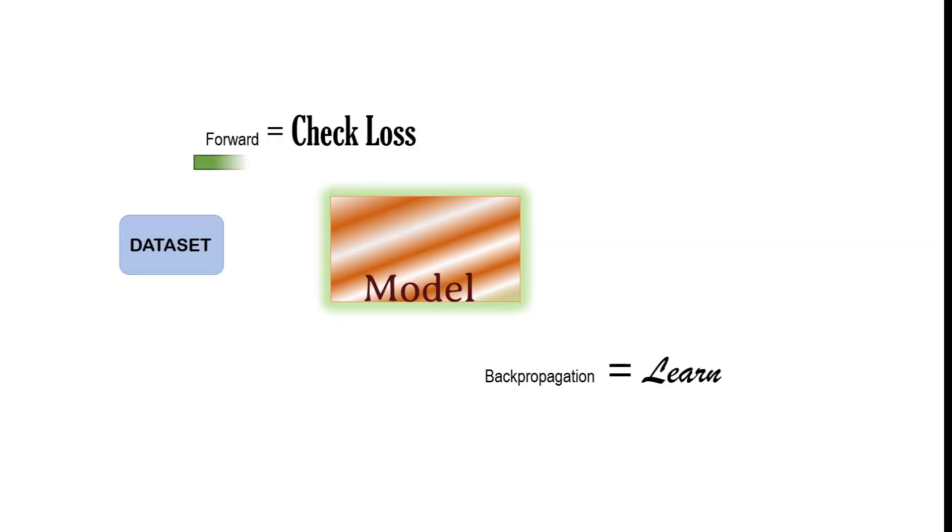This is a model and this is the labeled data. When we pass this data through the model forward and backward, the model will learn the features automatically. But how do we know how many times we need to pass this through the model?